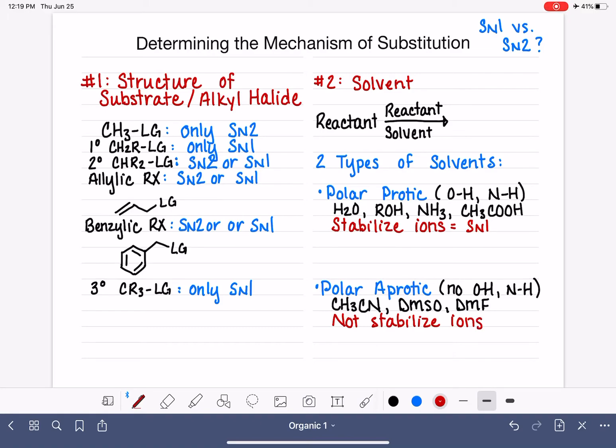We need a polar protic solvent to stabilize the cation that is formed in the SN1 reaction. In the case of the polar aprotic solvent, we want to use that in the SN2 reaction because we want to leave our negatively charged nucleophile relatively reactive so it can attack our carbon.